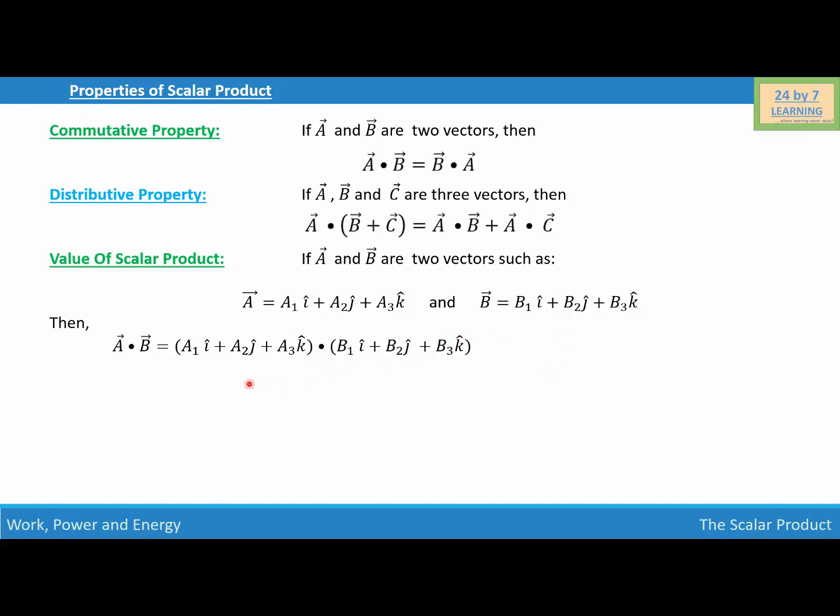Now what we need to do, we need to distribute the vectors. So if we do that, we'll write A1i times this vector right here plus A2j times this one right here plus A3k times vector B which is over here.